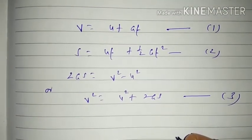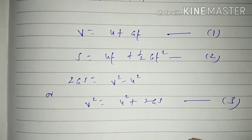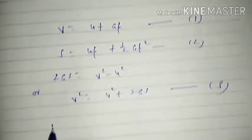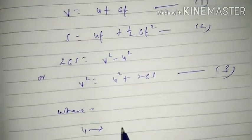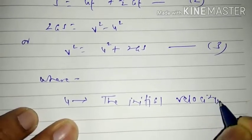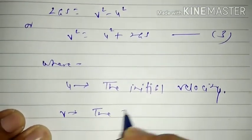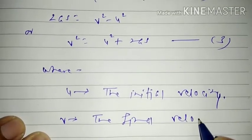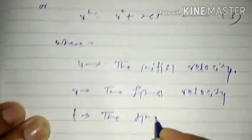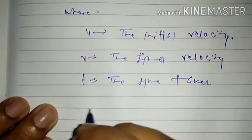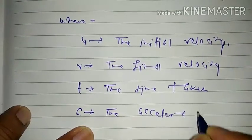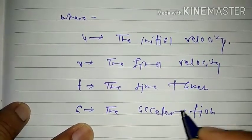With the help of these equations we can solve numericals related to different types of uniformly accelerated motion. Now let us see what each term means. U represents the initial velocity, V represents the final velocity.